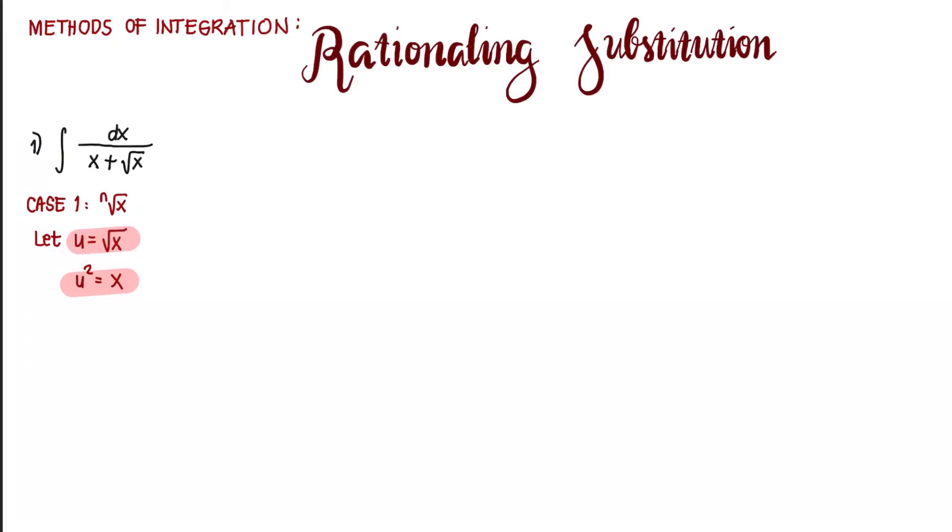Square root of x in terms of u is already here. Now what we're lacking is something to replace dx. That's why we find the differential. Finding the differential, dx equals 2u du. So we have something to replace dx now. Because that's already complete, we substitute.